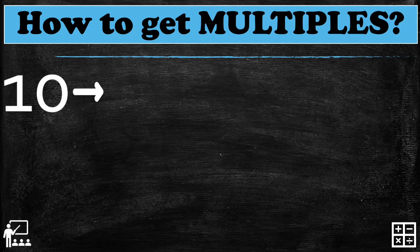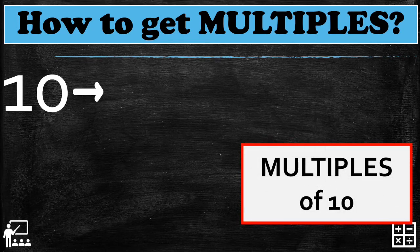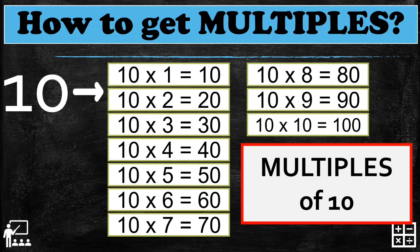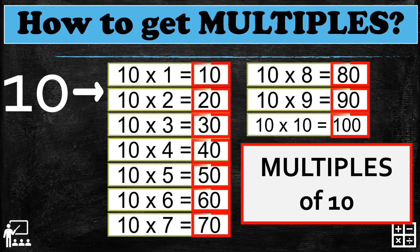Let's try a bigger number — I have ten. It's very easy for you to find out the multiples of ten. Can you guess where the multiples of ten are in this table? I'll give you three seconds... Very good! They are: ten, twenty, thirty, forty, fifty, sixty, seventy, eighty, ninety, and one hundred. These are the multiples of ten.